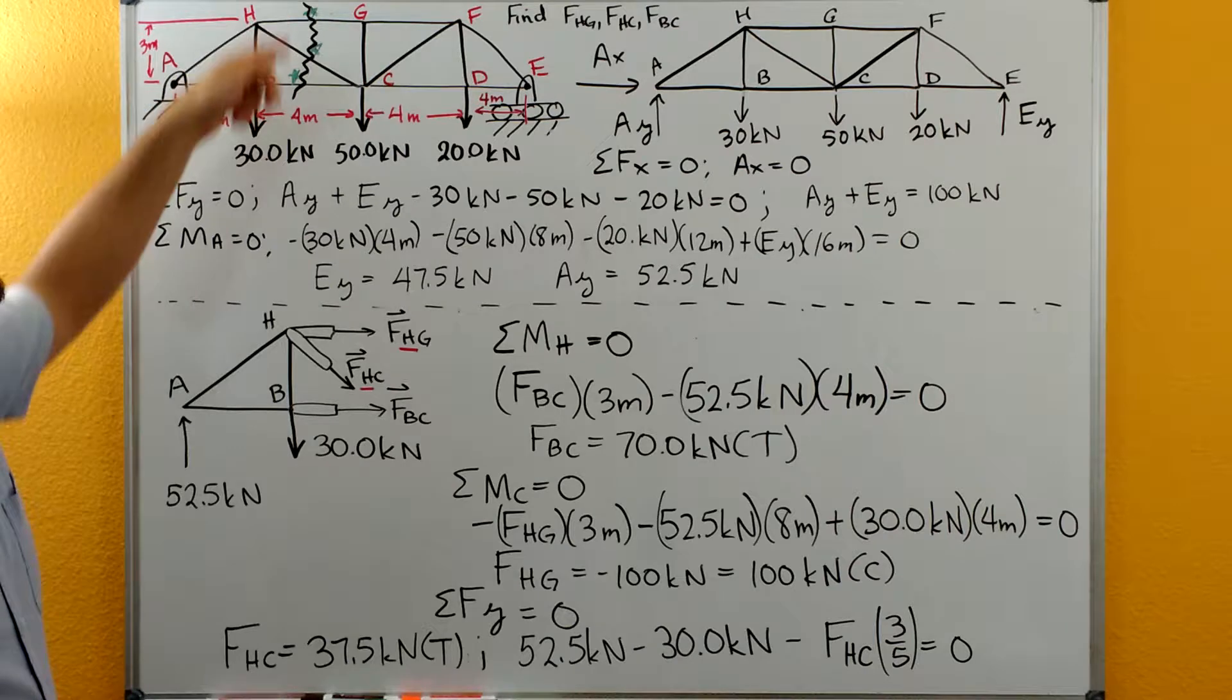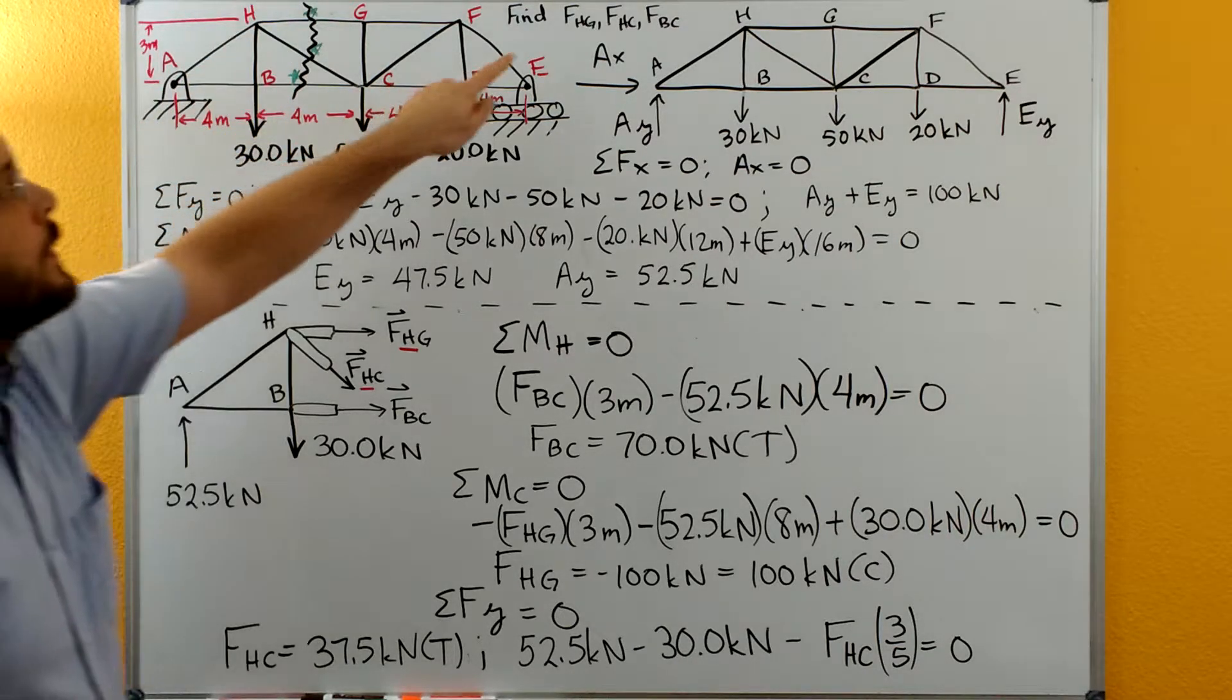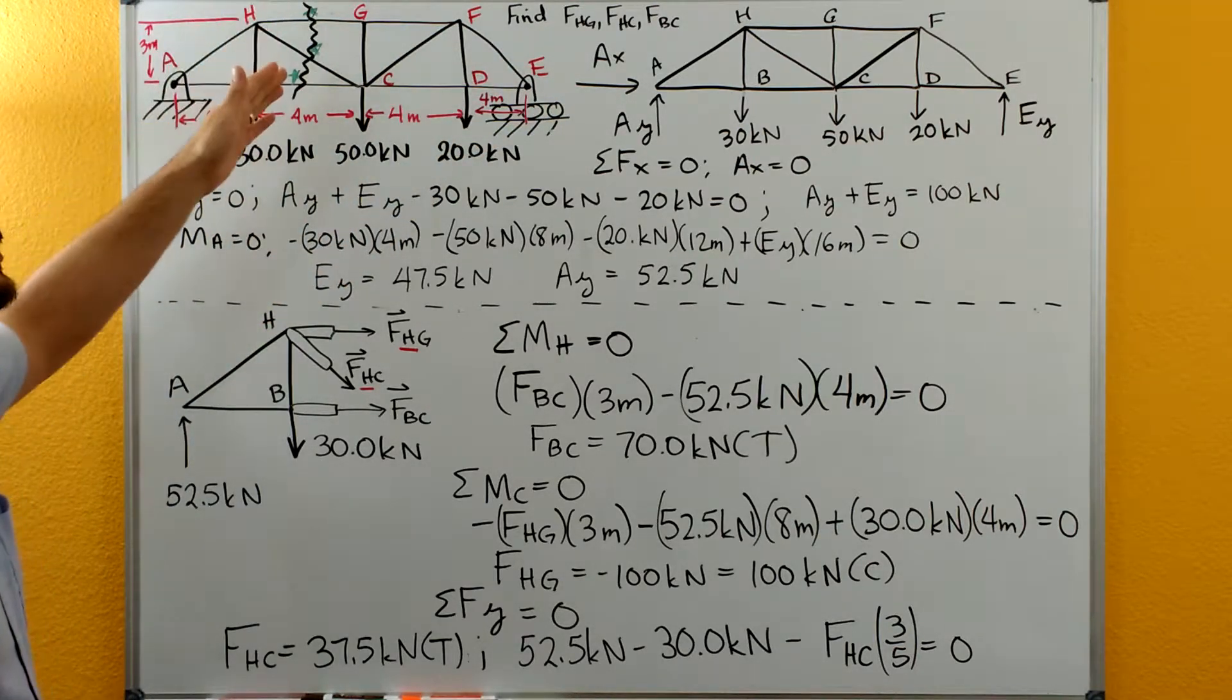We also want to cut through only three unknowns. In this case, we can cut through the three unknowns that we want to solve for and separate our truss into two pieces all in one shot.